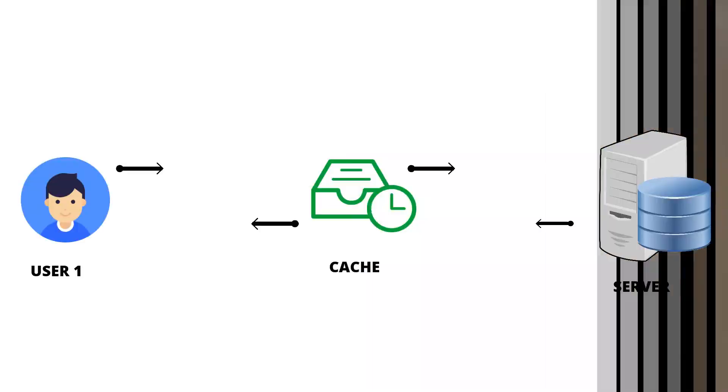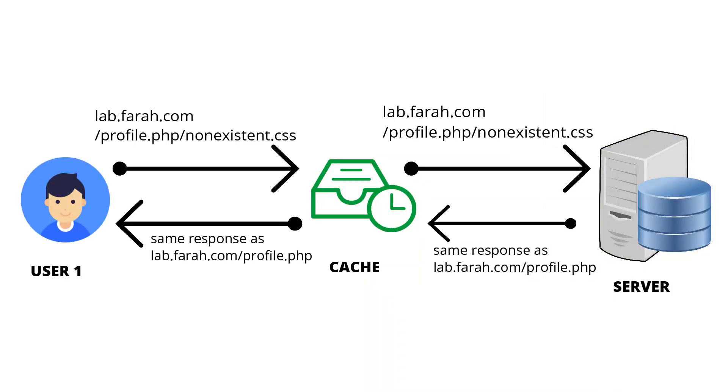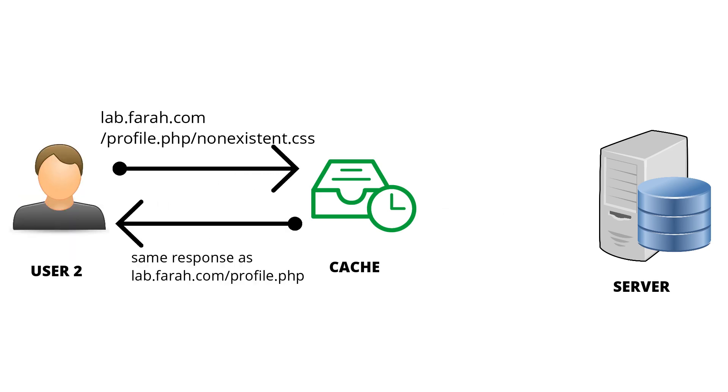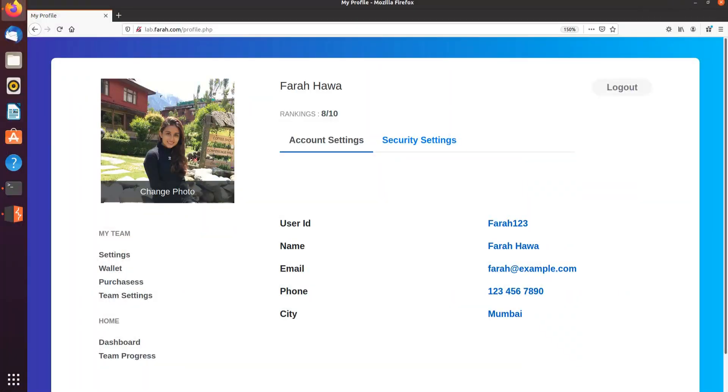Why is this relevant? Most caches are configured to cache all public and static files that have extensions like .css, .js, .png, and other similar extensions. So when we request a URL like profile.php/non-existent.css and it returns the content of profile.php, the cache sees the .css extension at the end and caches it because of its configuration — while the content of the URL contains sensitive, private information.